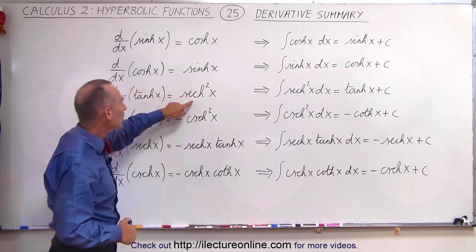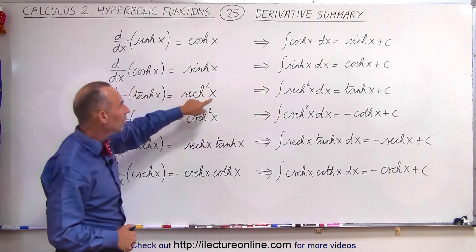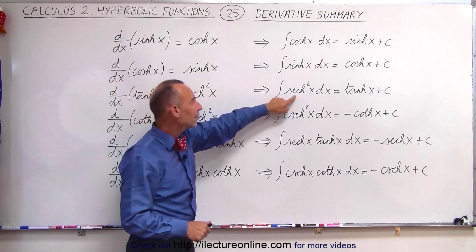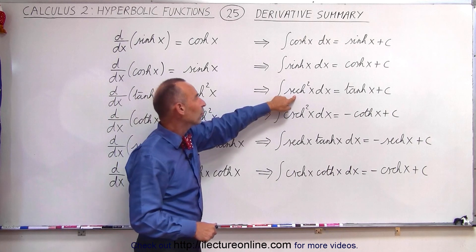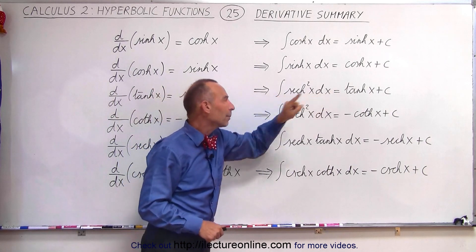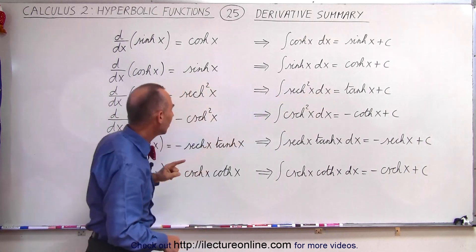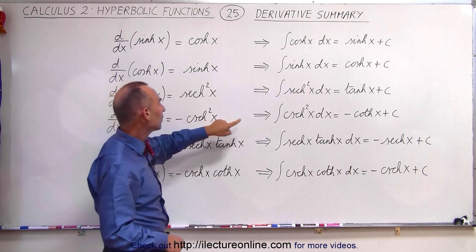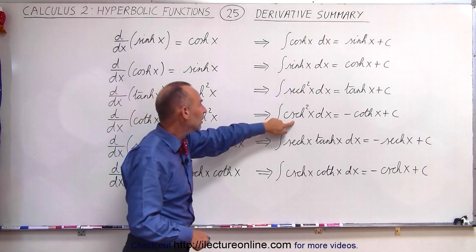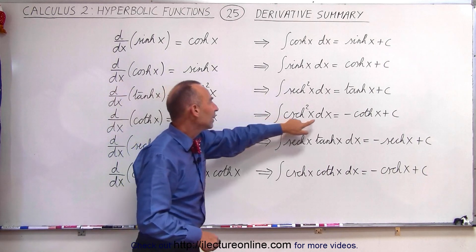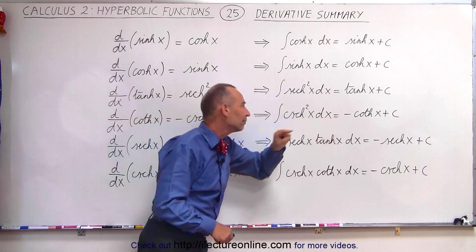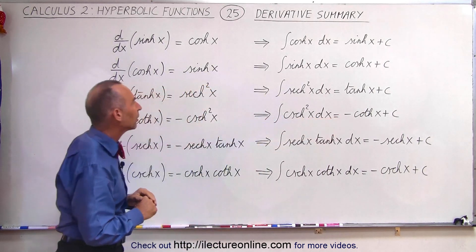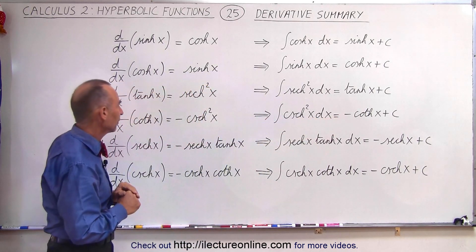Likewise, when we take the integral of the hyperbolic secant squared, we get the hyperbolic tangent, and if we take the integral of the hyperbolic cosecant squared, we get the negative of the hyperbolic cotangent.